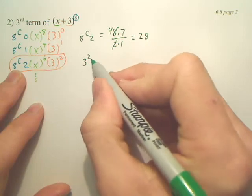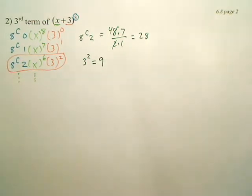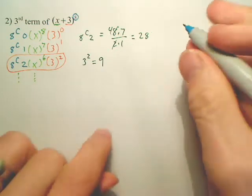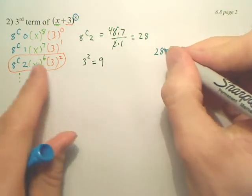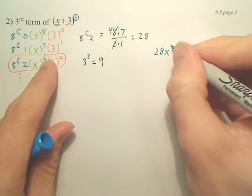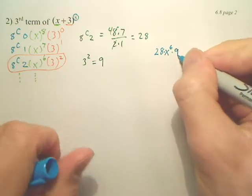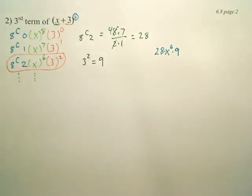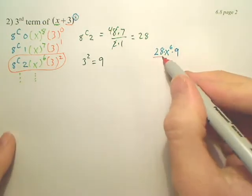And then we also have 3 squared. 3 squared is 9. So what I see here is I see 28x to the 6th times 9. Is that my answer? No.